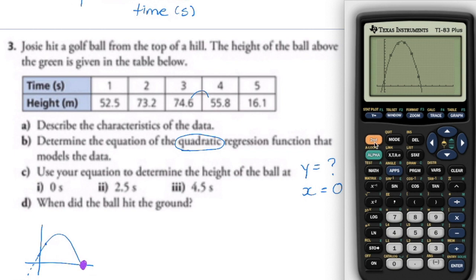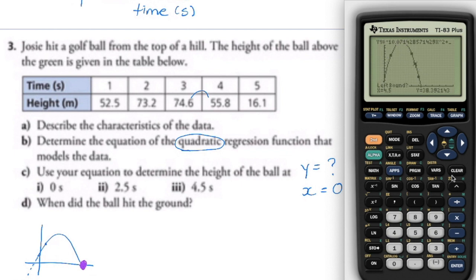Similar to what we did last year, go to Second Function Trace — we know the zeros are the x-intercepts — and pick number two. Move your cursor to the left of the x-intercept and press enter. The calculator prompts you to confirm you're on the right side, so move to where Y is negative and press enter again. The calculator guesses for that value within the range — press enter and there's the value.